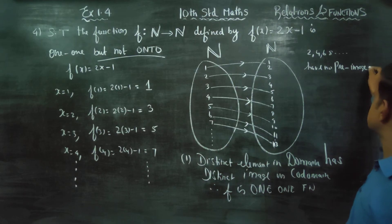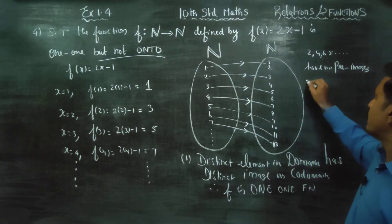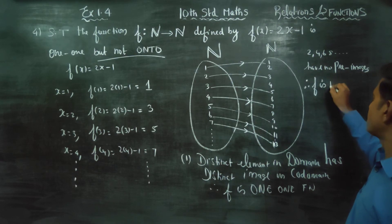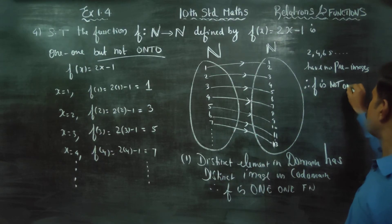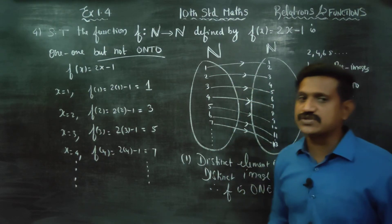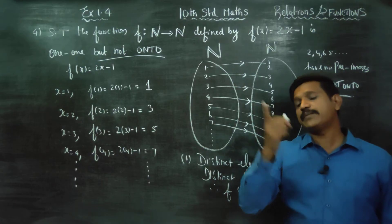Therefore, F is not onto. For onto, all elements in the codomain must have a pre-image.